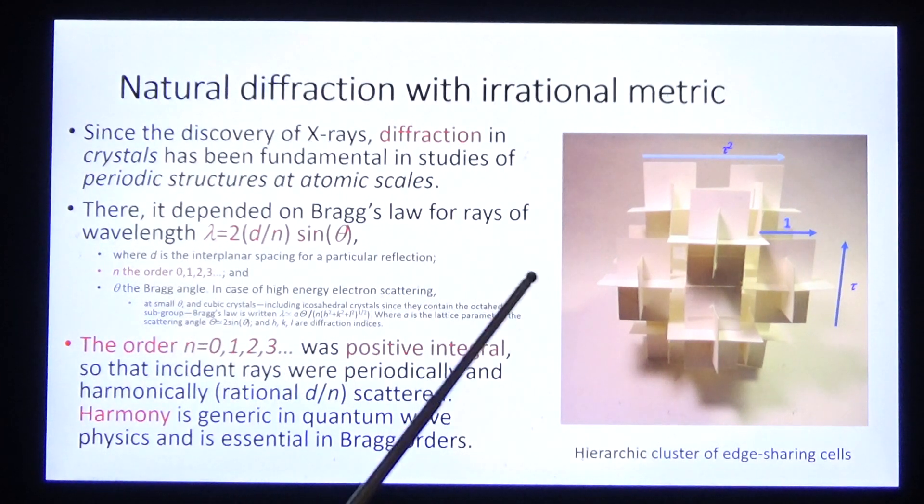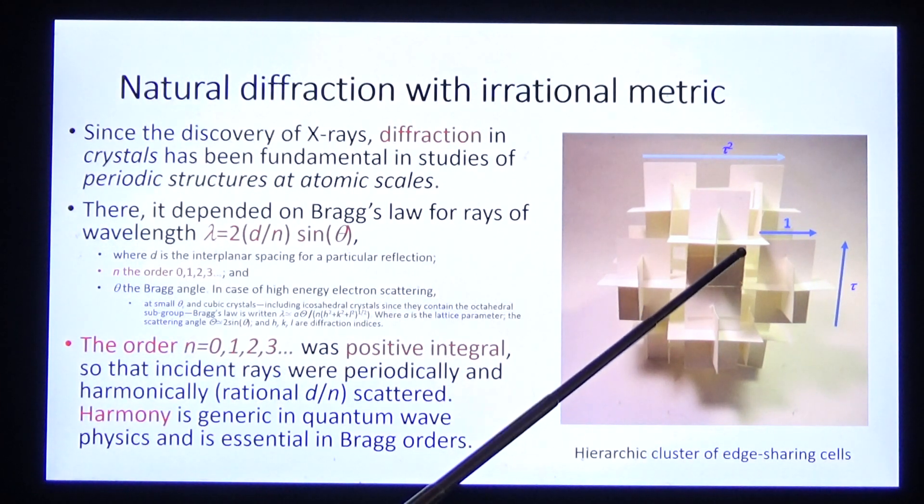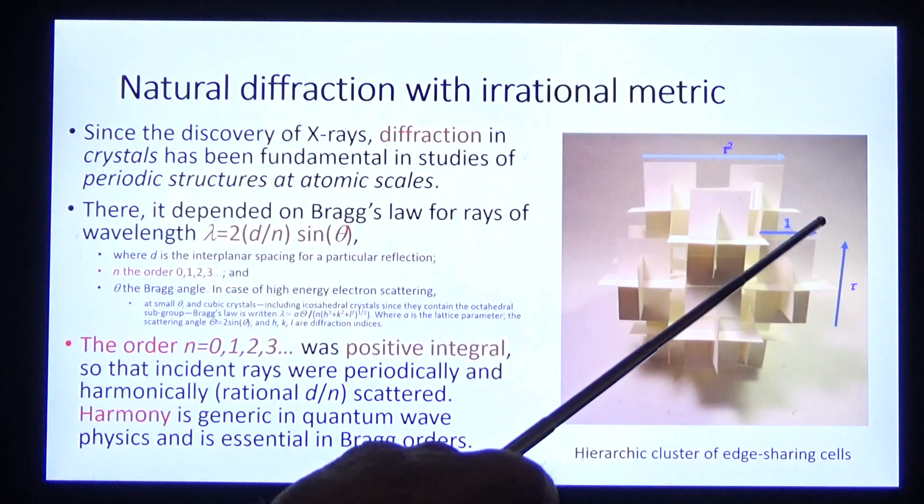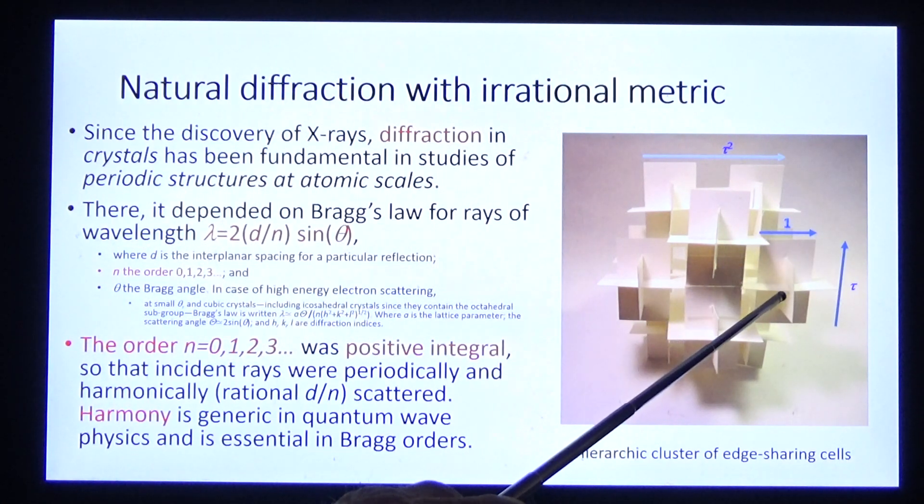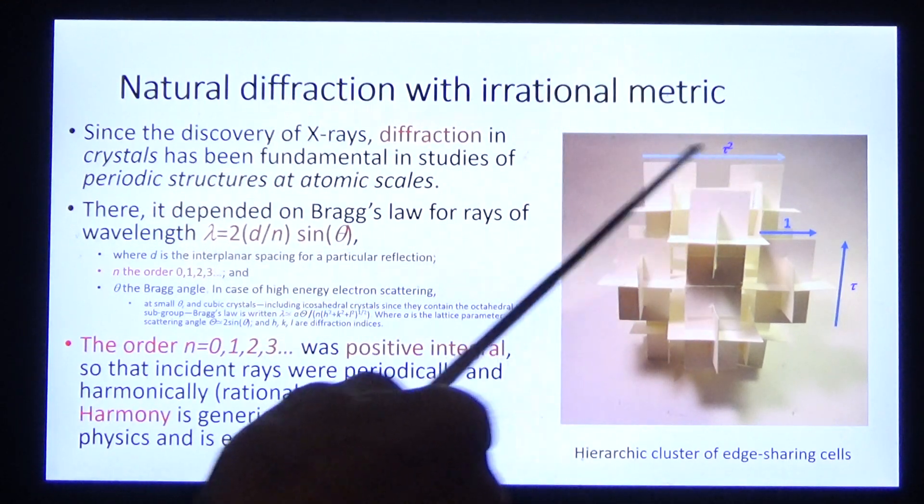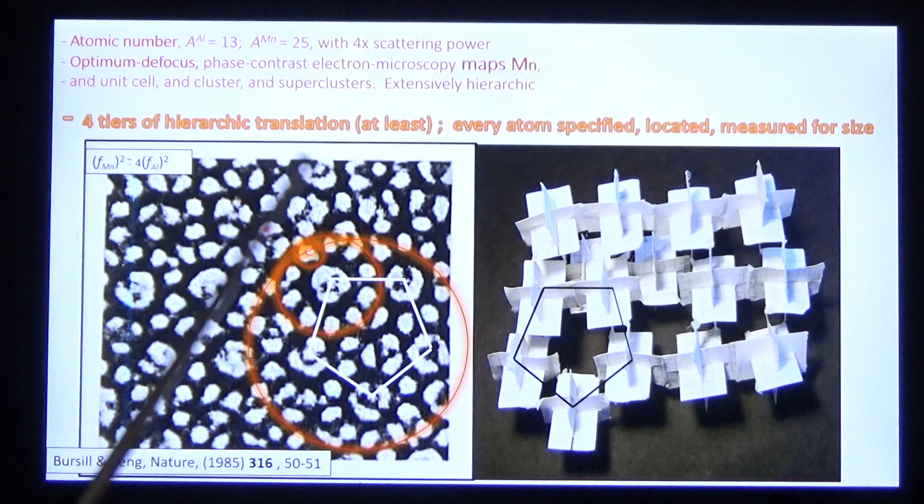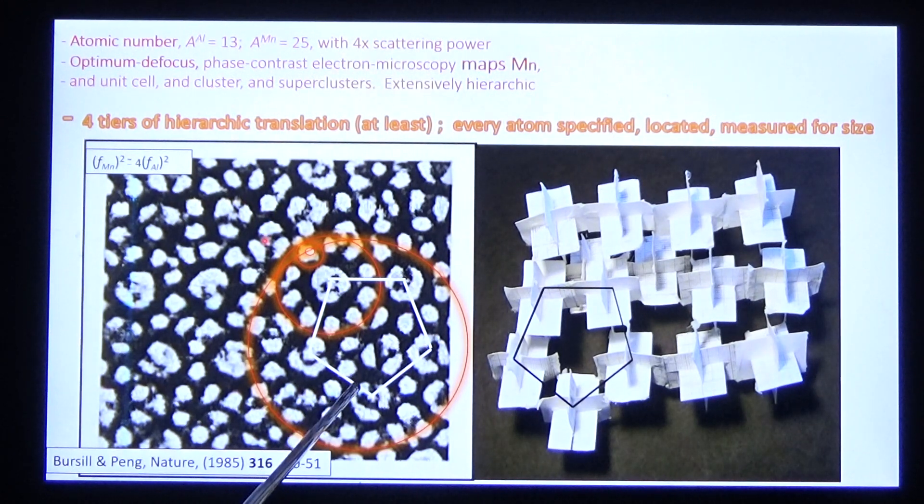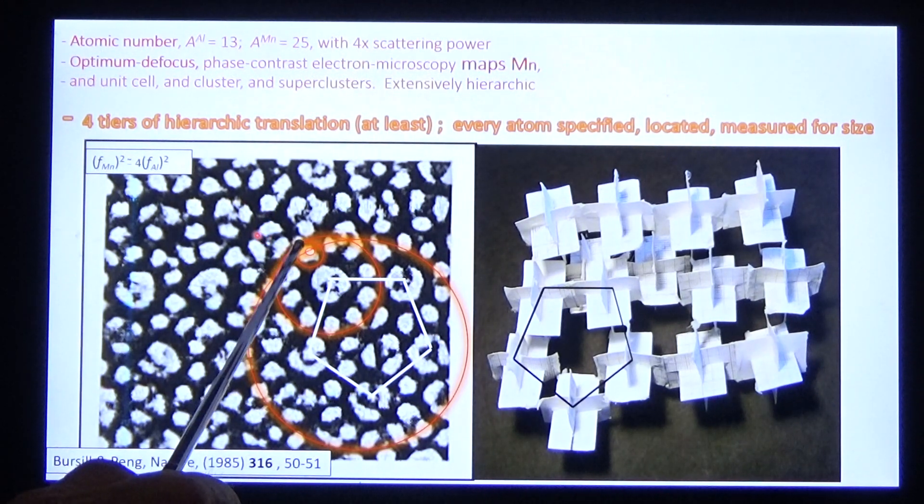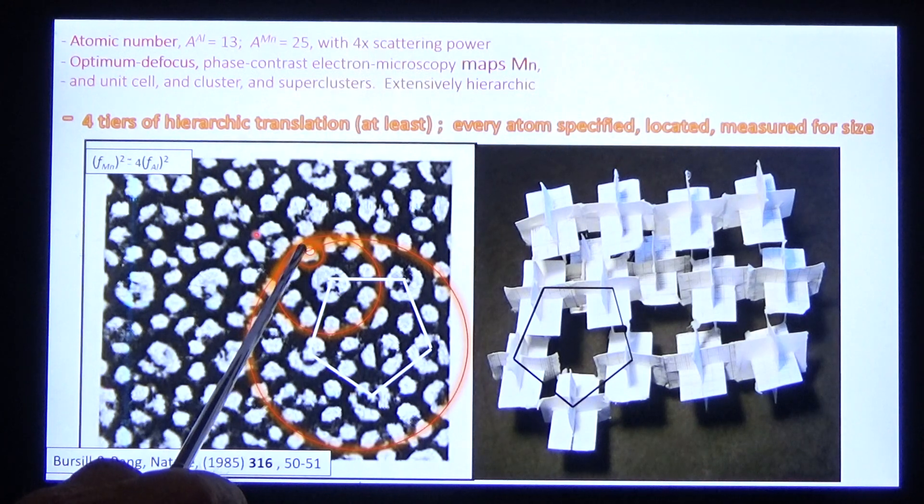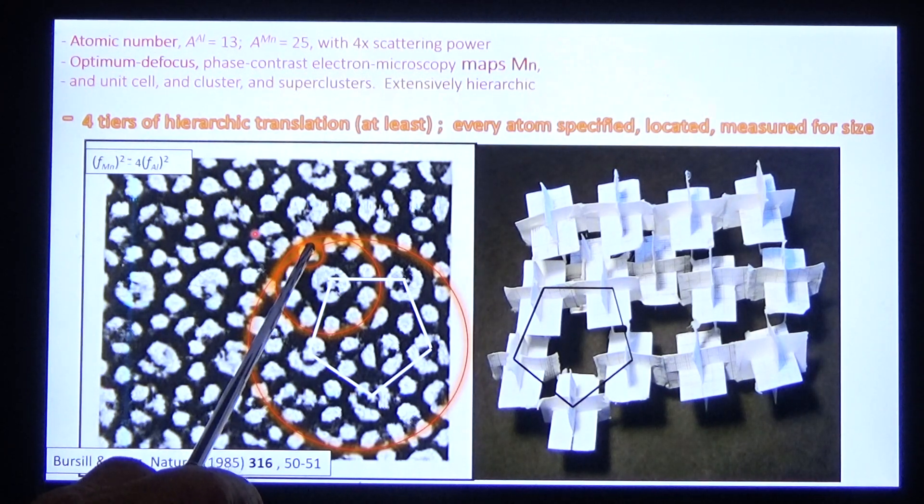And the cluster is made up of icosahedral unit cells. Notice that the edge width of the unit cell stretches to tau squared in the icosahedral cluster and to tau to the power of four in the supercluster. Here's manganese.